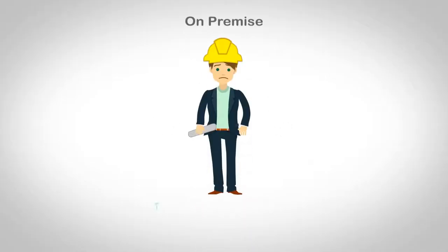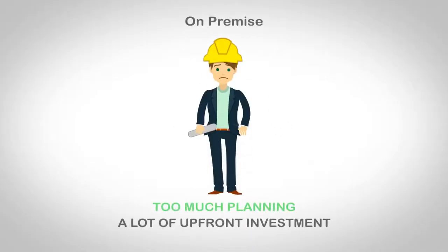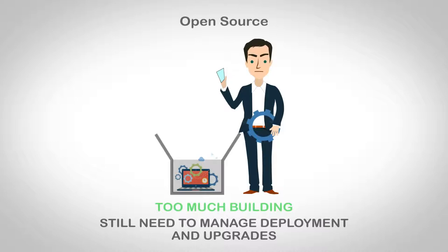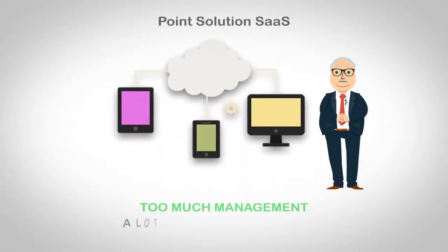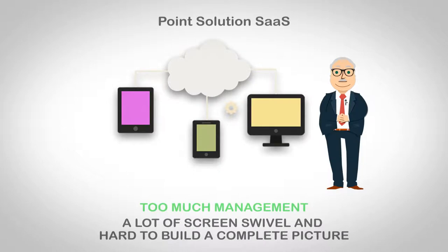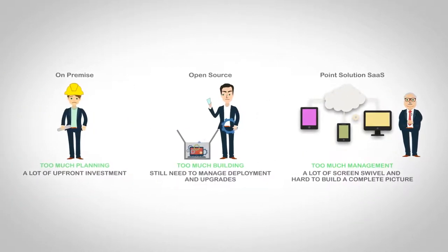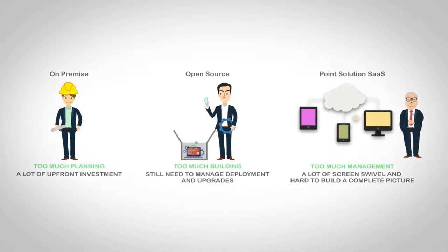Current solutions, such as on-premise applications or open-source tools, require a lot of work in hardware setup, install, and ongoing application management. Software as a service-based products are better because they allow you to focus on the core problem. However, current products handle the problem in isolated parts — that is to say, they manage only logs or only metrics.